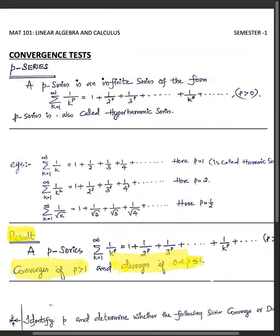Now, a p-series is an infinite series of the form summation from k=1 to infinity of 1/k^p, which expands as 1 + 1/2^p + 1/3^p + ... where p is greater than 0. This series is called a p-series, also known as a hyper-harmonic series.